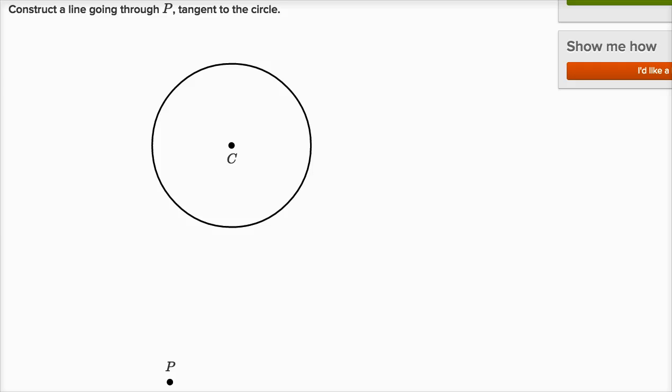Let's do another example of using a virtual compass and virtual straight edge to draw a tangent line to a circle. We're told to construct a line going through P tangent to the circle. And in this example, P doesn't sit on this circle. P is outside of the circle.